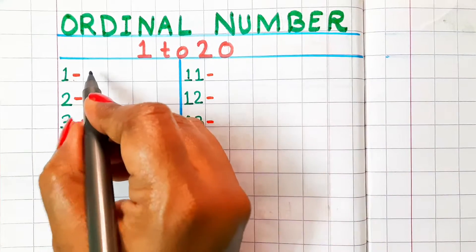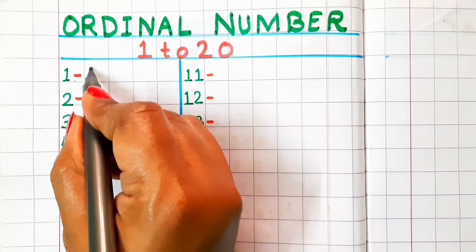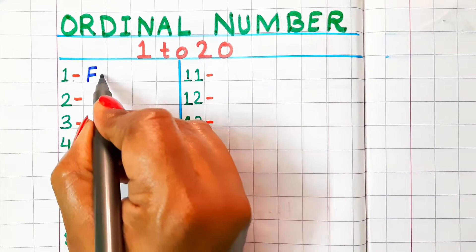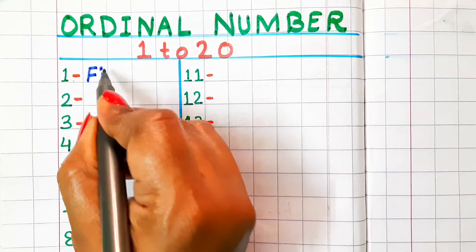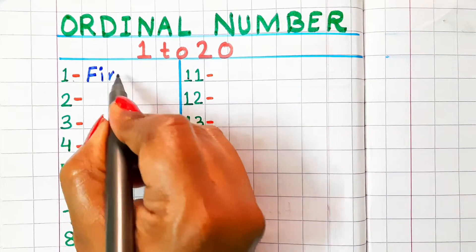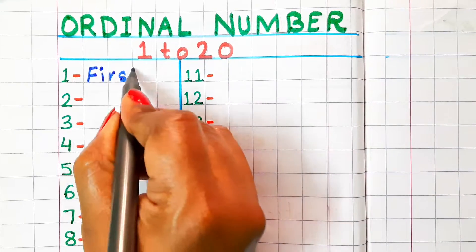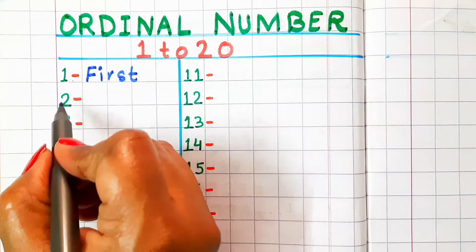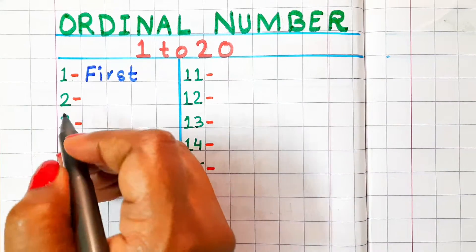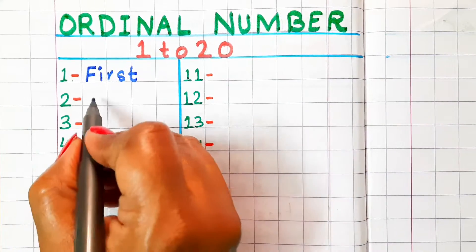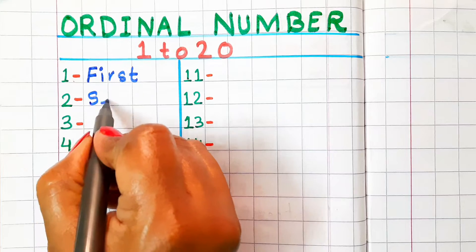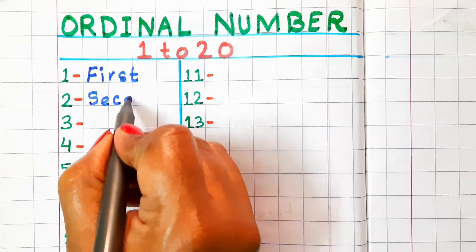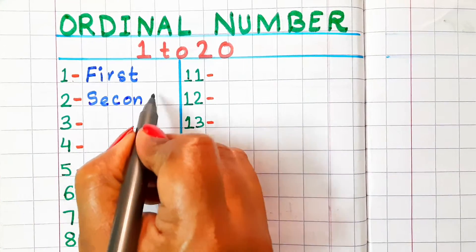These are ordinal numbers in English. 1 — in ordinal, it is called first and the spelling is F-I-R-S-T. 2 — in ordinal number, it is called second and the spelling is S-E-C-O-N-D.